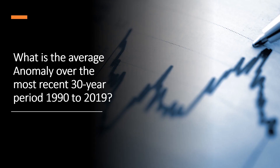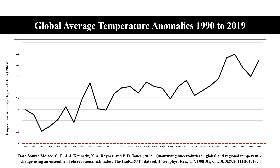The next step is to ask: what is the average anomaly over the most recent 30-year period, that is 1990 to 2019? The global average temperature anomaly for 1990 to 2019 is 0.449 degrees Celsius.